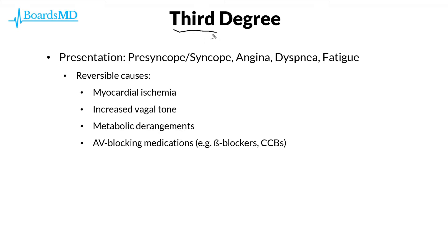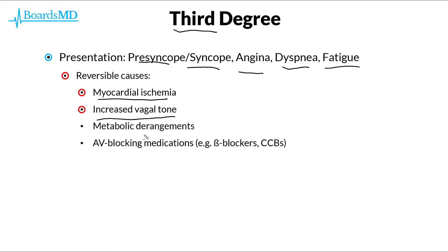Patients with third degree heart block classically are going to present with presyncope or syncope, as well as angina, dyspnea, and fatigue. Third degree heart block can be set off by several reversible causes, including myocardial ischemia, increased vagal tone, metabolic derangements, as well as iatrogenic causes such as AV blocking medications, including beta blockers and calcium channel blockers.